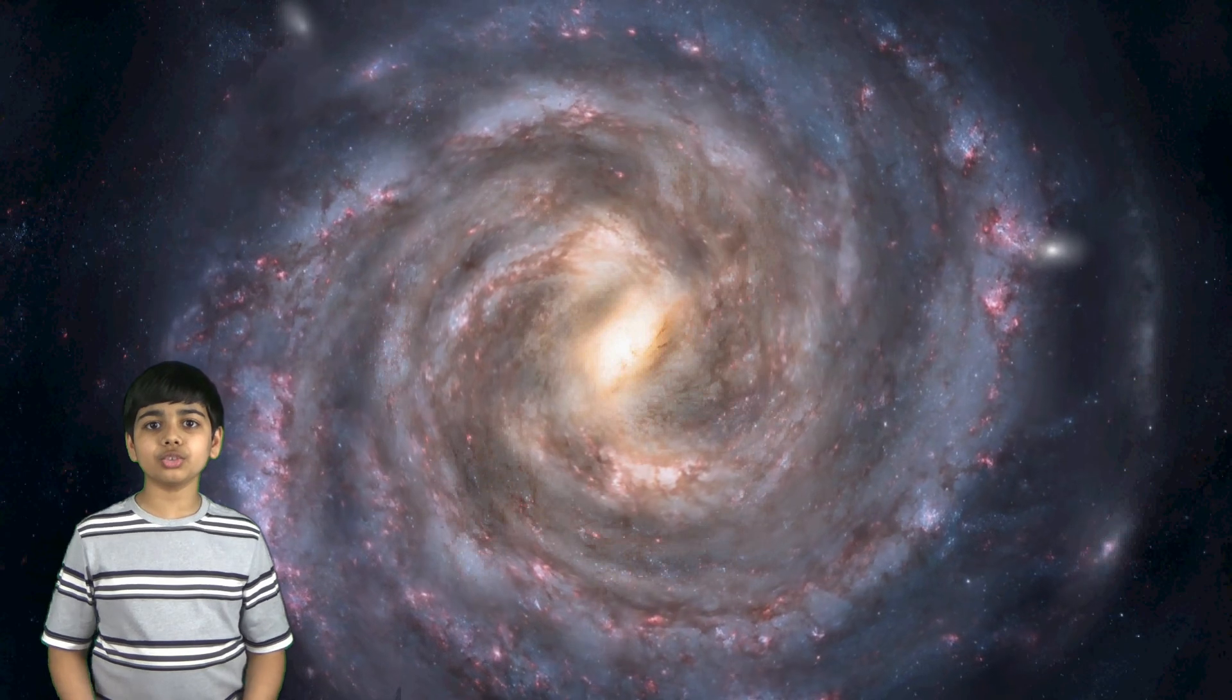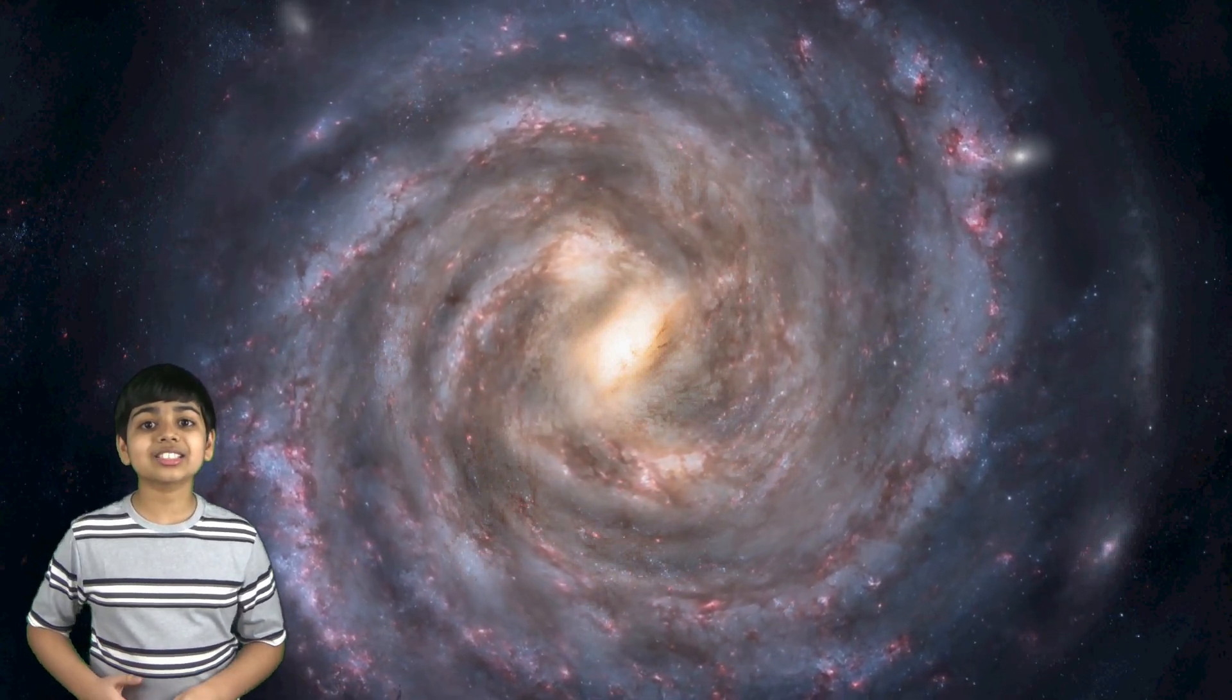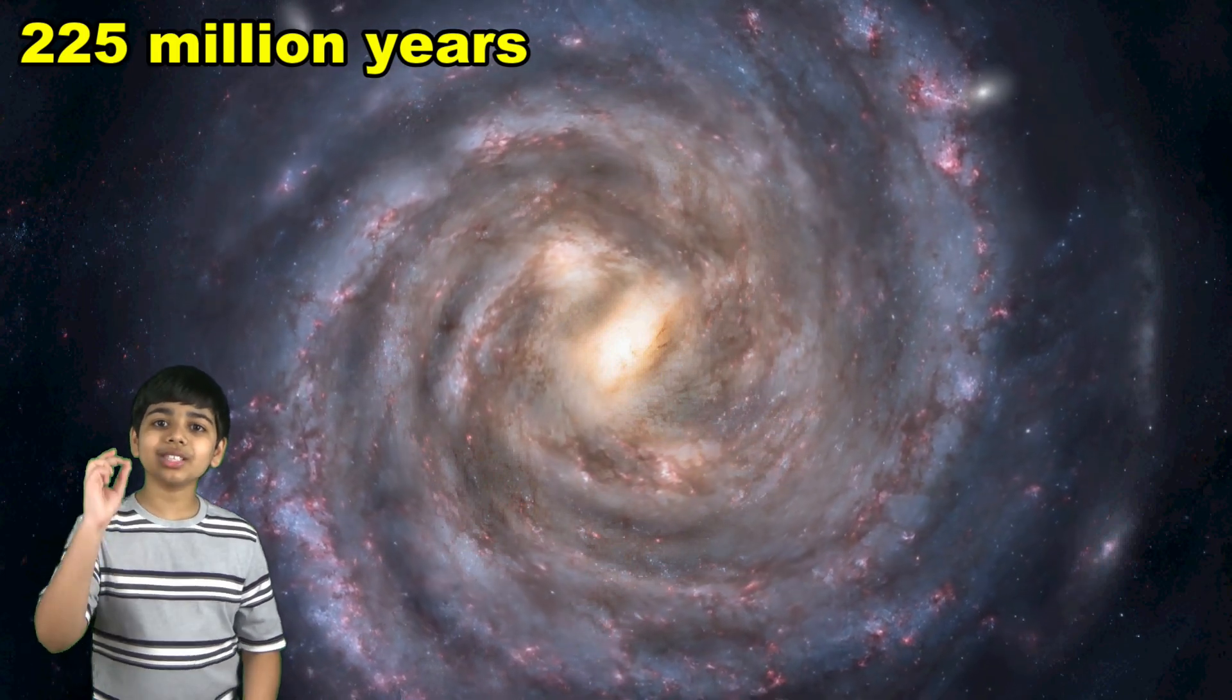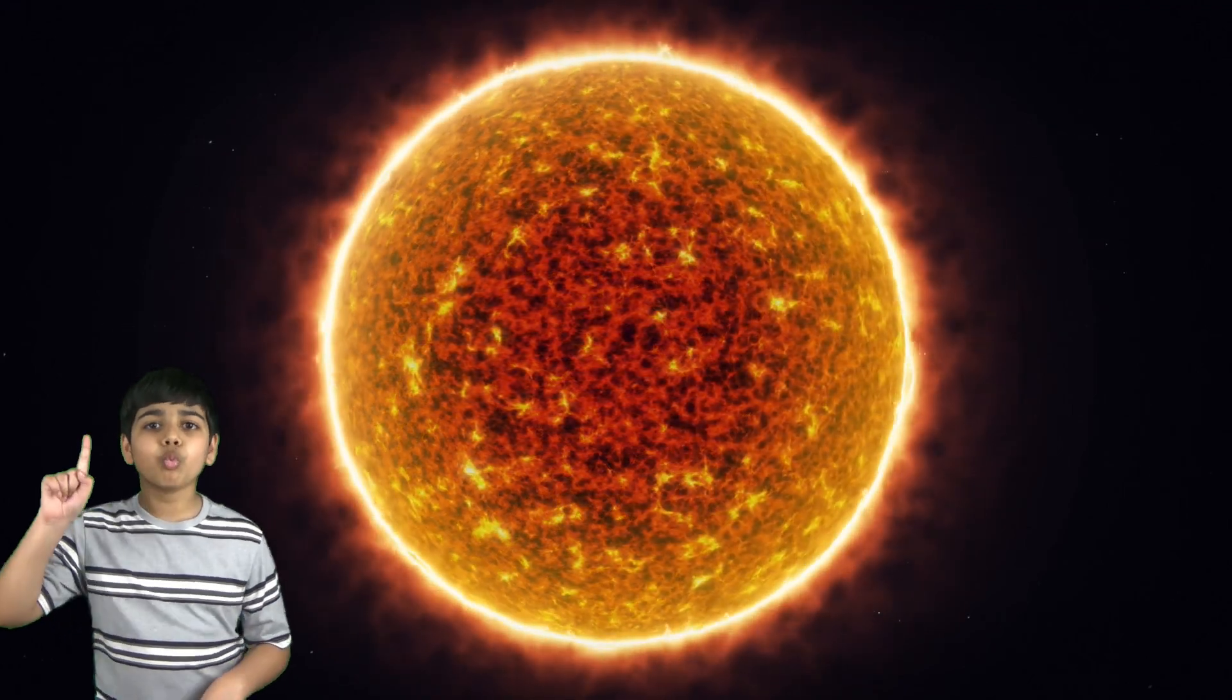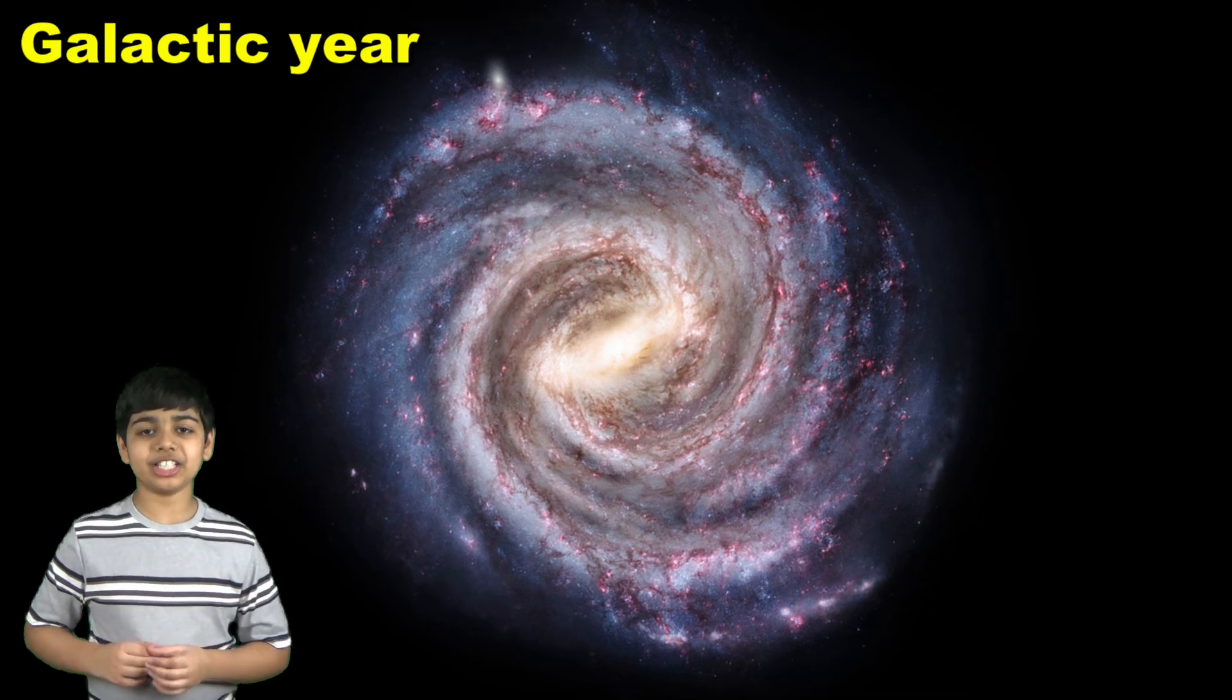This speed is just relative to our neighboring stars, but actually, it takes approximately 225 million years for our sun to make just one trip around the galaxy, which we call a galactic year.